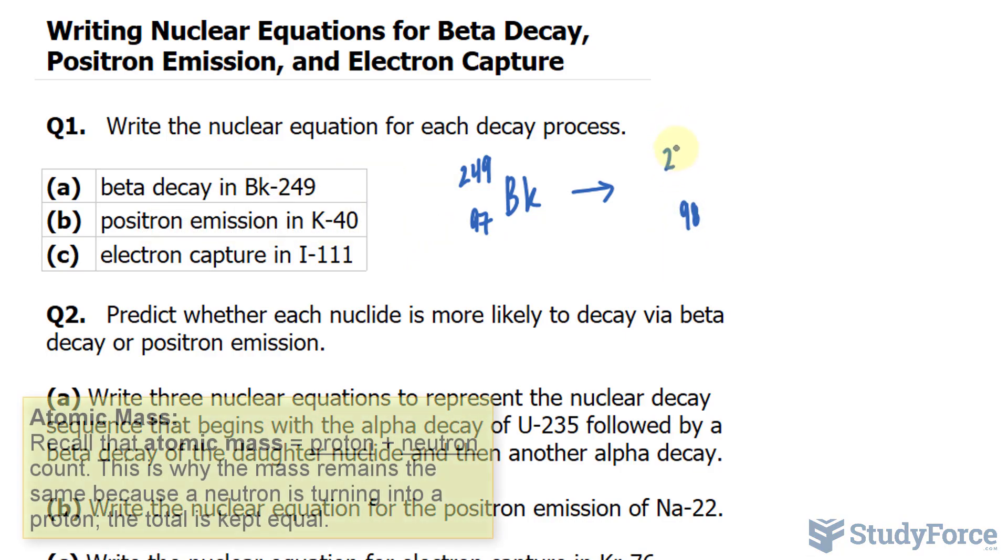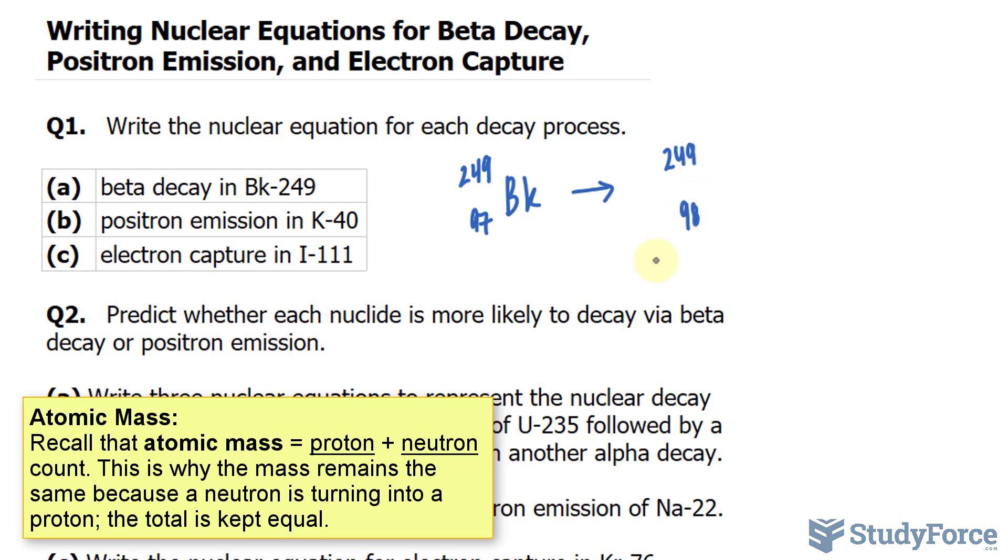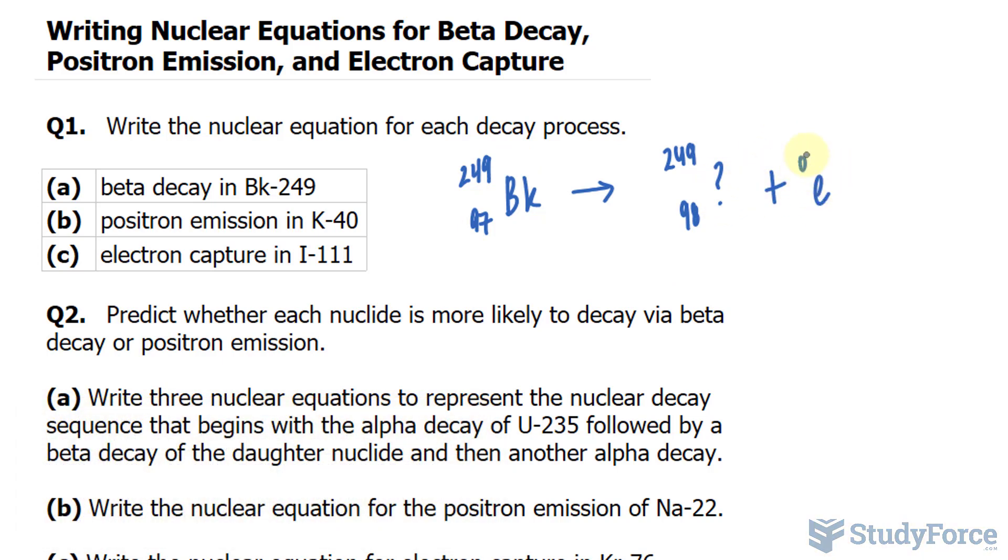The atomic mass always remains the same when writing these. The nuclide, of course, has changed, so we're no longer going to use Berkelium. We'll just put a question mark there for now. And also, there's an emission of an electron, which has an atomic mass of 0, and we'll write down negative 1 for its proton count.